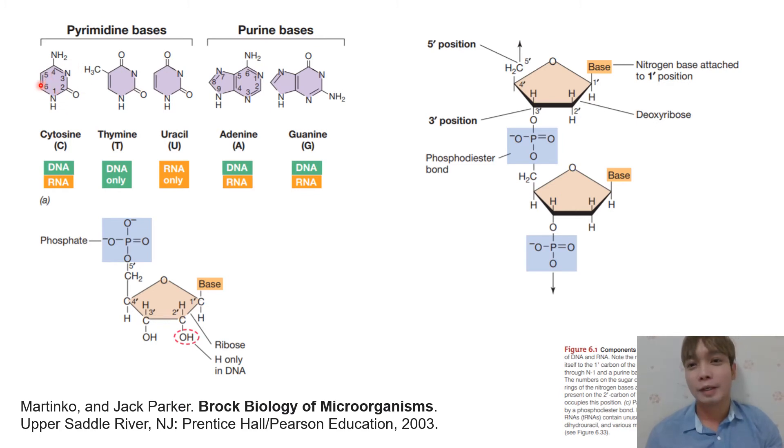One ring—the nitrogen here, number one, attached to carbon number one of our ribosugar. And then the number nine of purine, nitrogen number nine of purine, attached to carbon number one of our ribosugar.